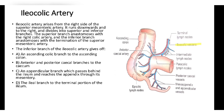The ileocolic artery arises from the right side of the superior mesenteric artery. It runs downward to the right and divides into superior and inferior branches. The superior branch anastomoses with the right colic artery and the inferior branch anastomoses with the termination of the superior mesenteric artery. The inferior branch gives off: a branch to the ascending colon, anterior and posterior cecal branches to the cecum, an appendicular branch which passes behind the ileum to reach the appendix through its mesentery, and an ileal branch to the terminal ileum.